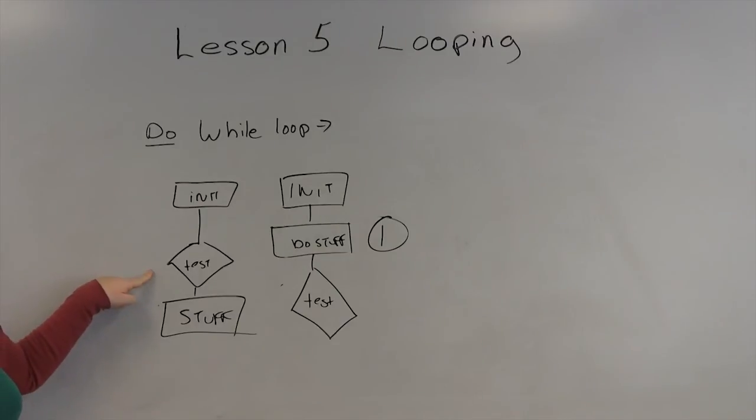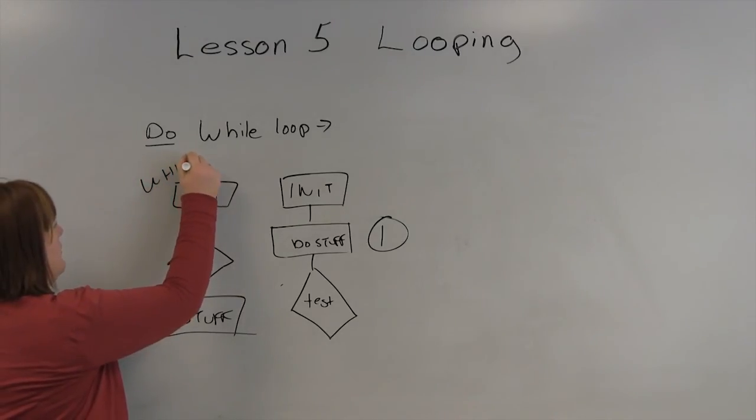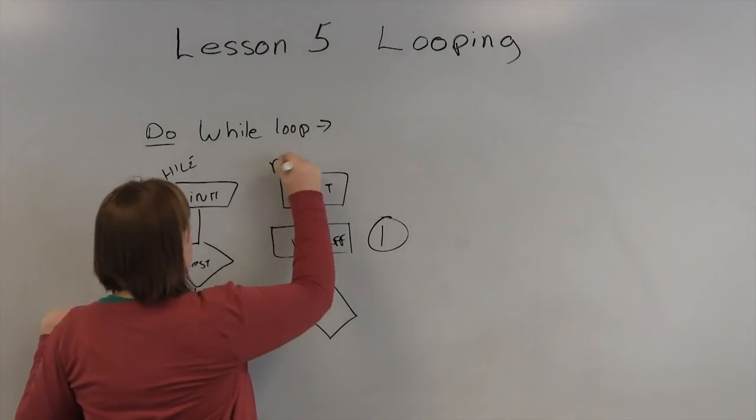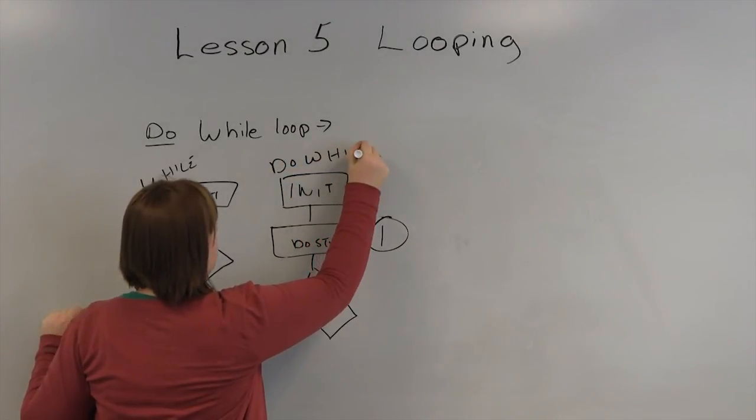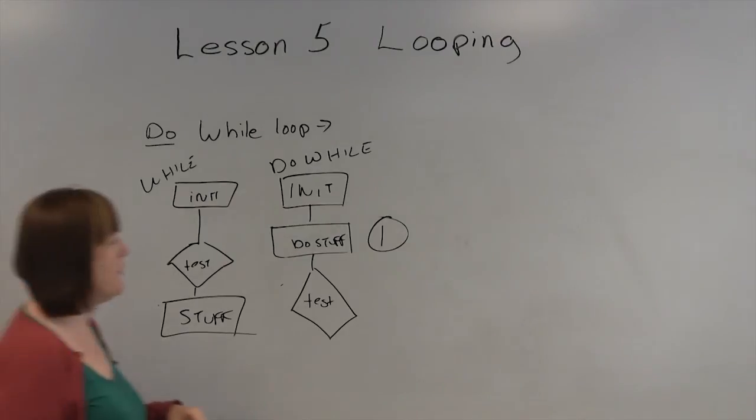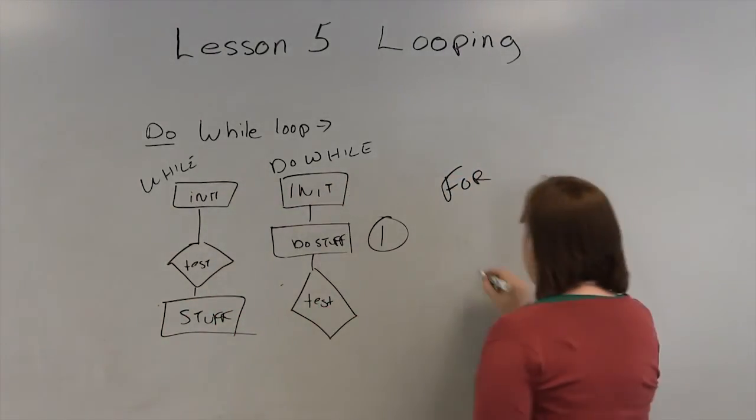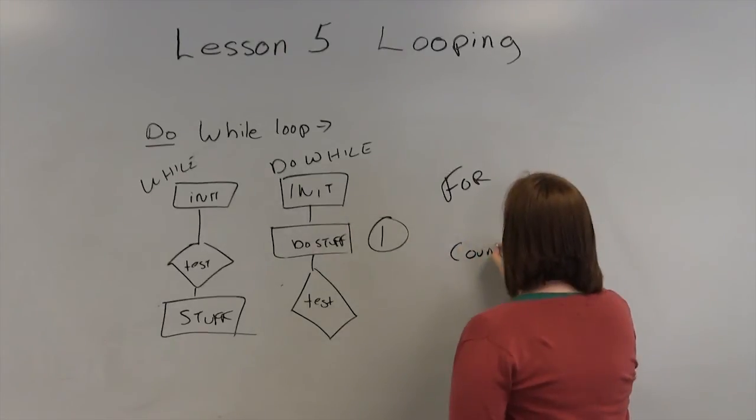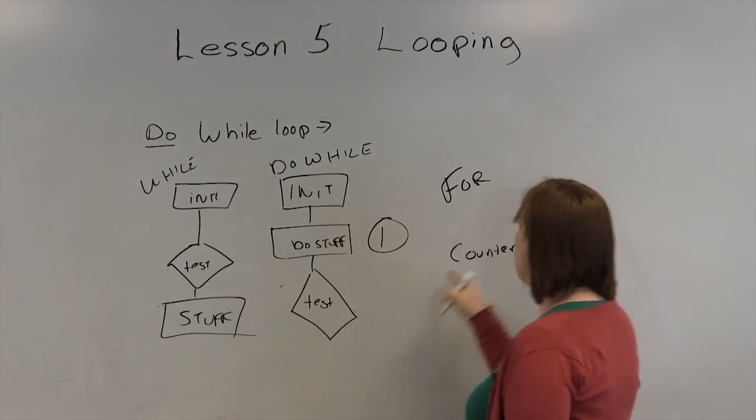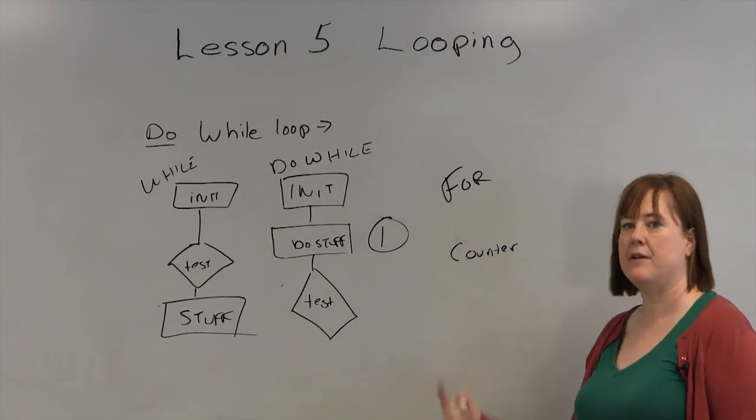There is one more type of loop which we just went through. That's a for loop. And that's simply a counter. Now, you can do a counter with a while or a do-while, but a for loop exists to be a counter, to do something a specific number of times.